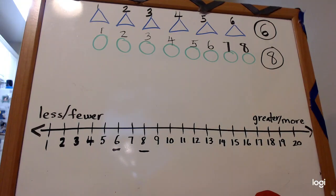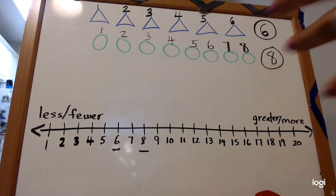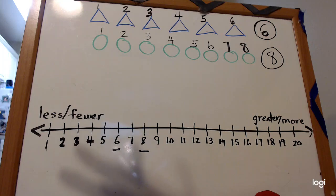And you know, on our number line, we always put the words less and fewer, greater and more. So that way, when we're looking at our number line, we know which number is greater, which number is less or fewer.